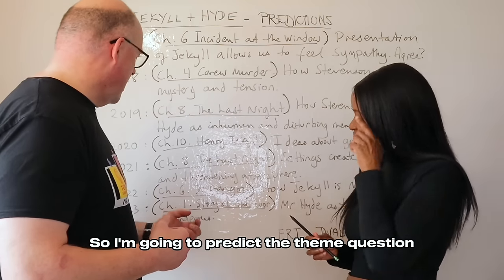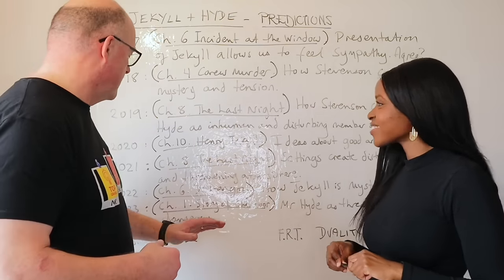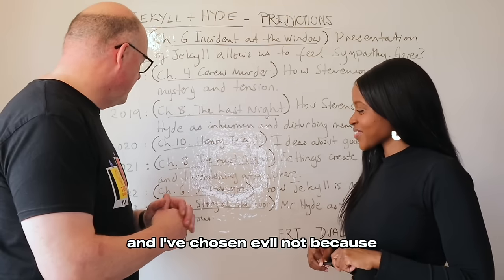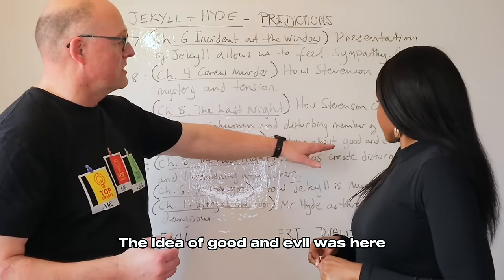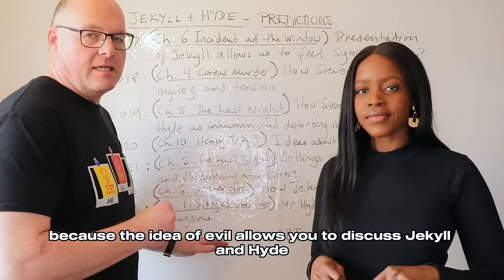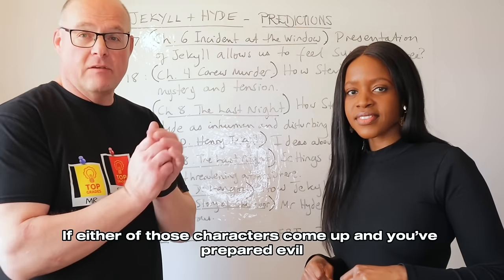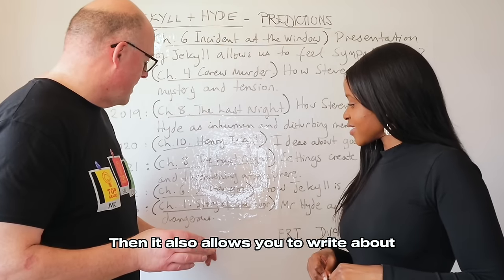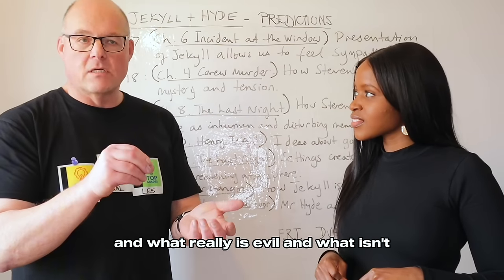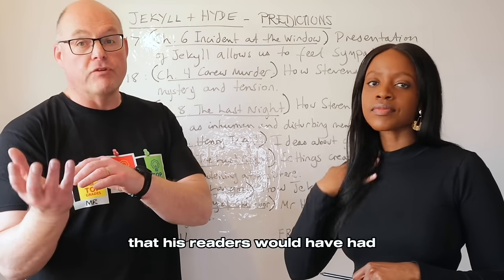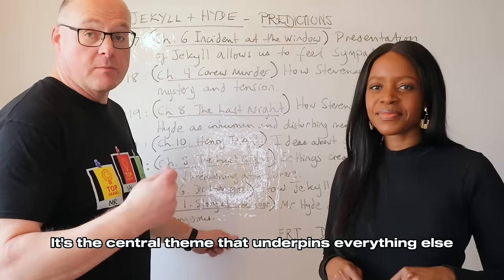This brings us to our predictions. I'm going to predict a theme question because we've had a few character questions in a row. I've chosen the theme of evil — not because it's definitely coming up, though good and evil has appeared before — but also because the idea of evil allows you to discuss Jekyll and Hyde. If either of those characters comes up and you've prepared evil, it will fit perfectly. It also allows you to write about Stevenson's actual views about society and what really is evil, contrasted with the Christian perspective his readers would have had. It's the central theme that underpins everything else.